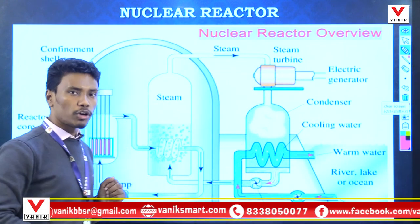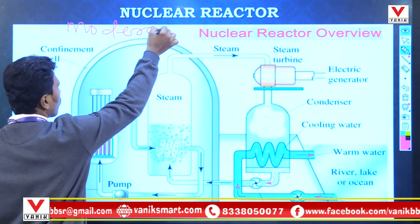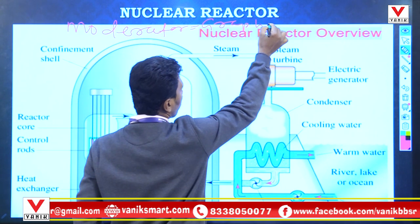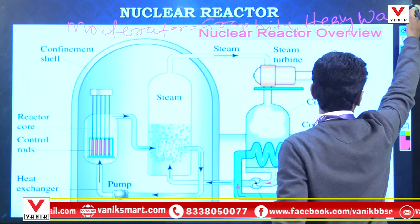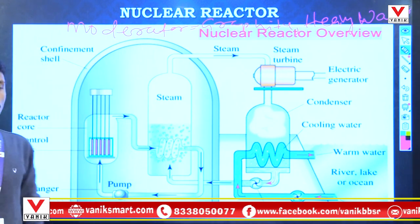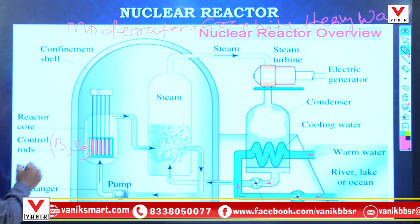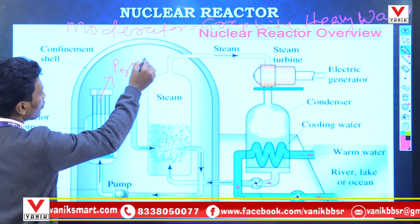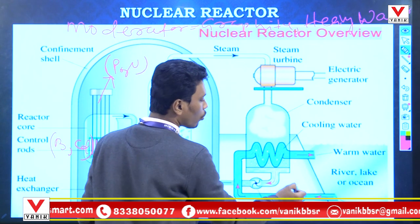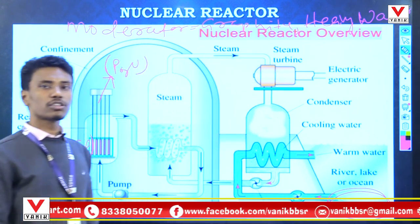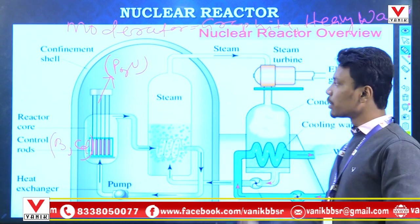The moderator is graphite and heavy water. The coolant — cold water — is used to cool the whole nuclear reactor. Steam is generated from the heat, and that steam is used to produce electricity. This is the typical nuclear reactor structure.